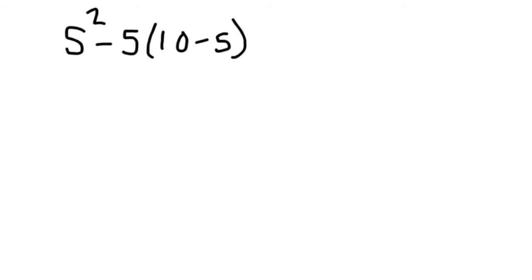Let's try evaluating a harder expression. Here we got 5 squared minus 5 times the quantity 10 minus 5. Do your parentheses first and then exponents. So we end up with 25 minus 25 which is 0.